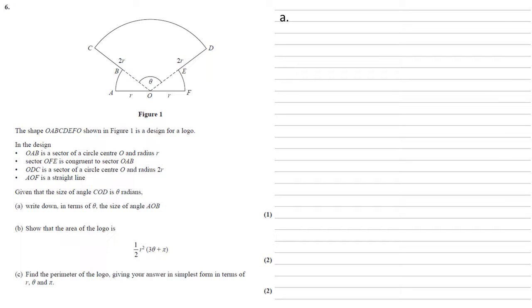Well, looking at the diagram, we can see that AOB and FOE must be the same size because those two sectors are congruent. We're told that earlier. And we know that the straight line AOF in radians is π.